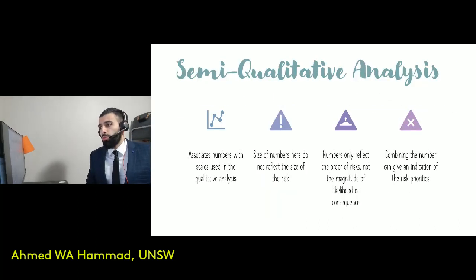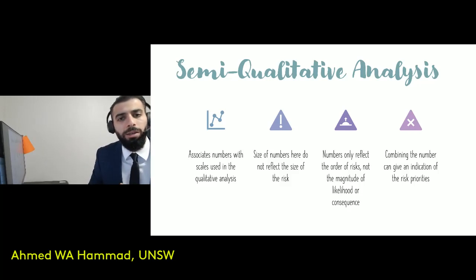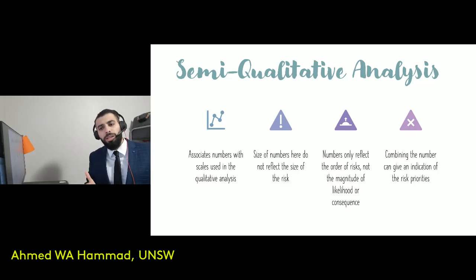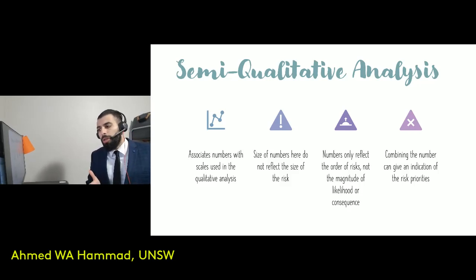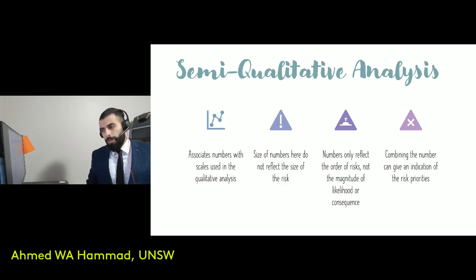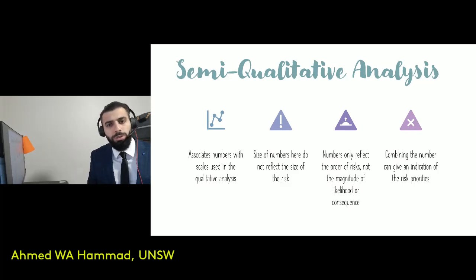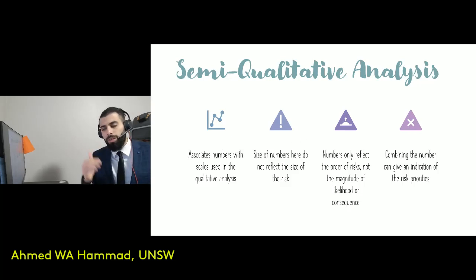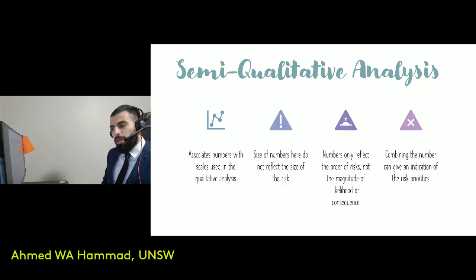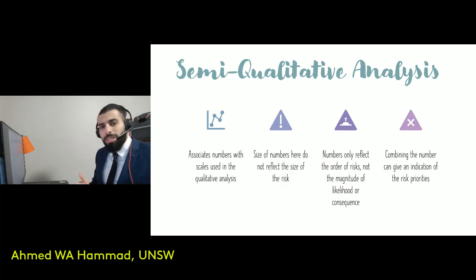Moving on to the semi-qualitative approach — as stated, you can't fully classify it as qualitative and you can't classify it as quantitative. It's in the middle because, similar to the example given, there are numbers associated with the scale, but the numbers are not continuous. In that example, you can't have 900 as a value representing anything — it's either 10, 100, or 1,000. So you associate numbers with a scale, but the scale itself represents qualitative descriptors.